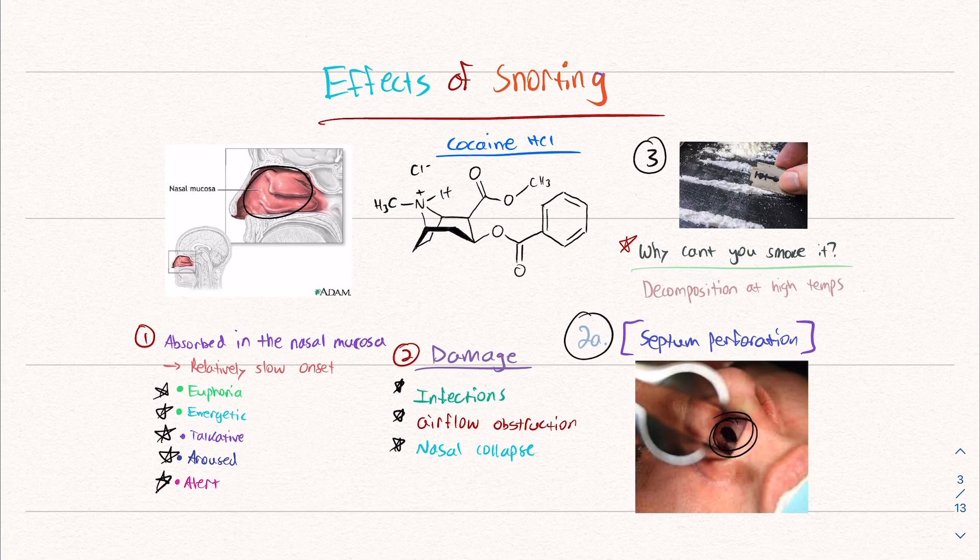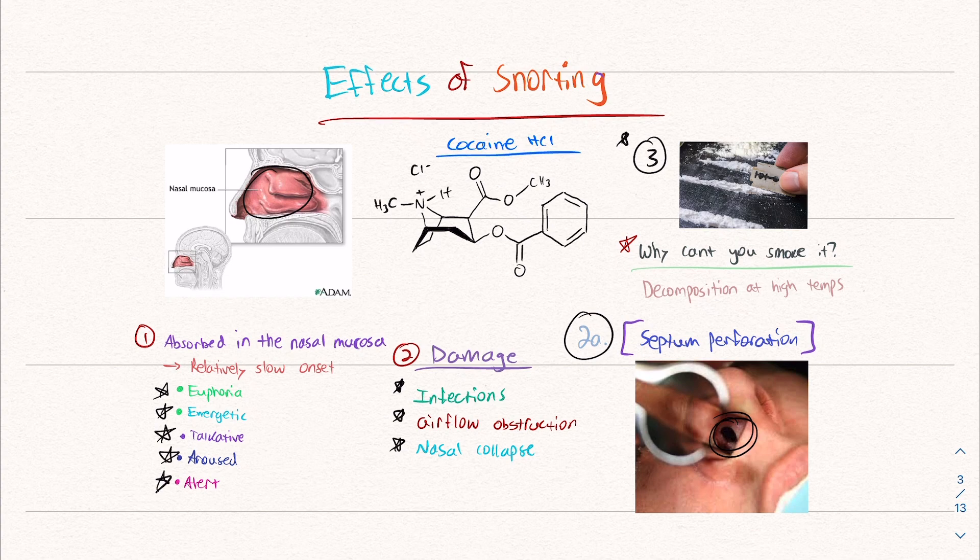You can't smoke it because cocaine hydrochloride decomposes rapidly at high temperatures. So chemically, it's a waste of product, which is why you have to convert it through freebasing to get a product that can be smoked.